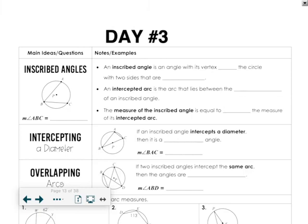This video is for chapter 12, day number three for geometry. This is about inscribed angles. Inscribed angles are angles with the vertex on the circle, with two sides that are chords. We talked about chords yesterday.